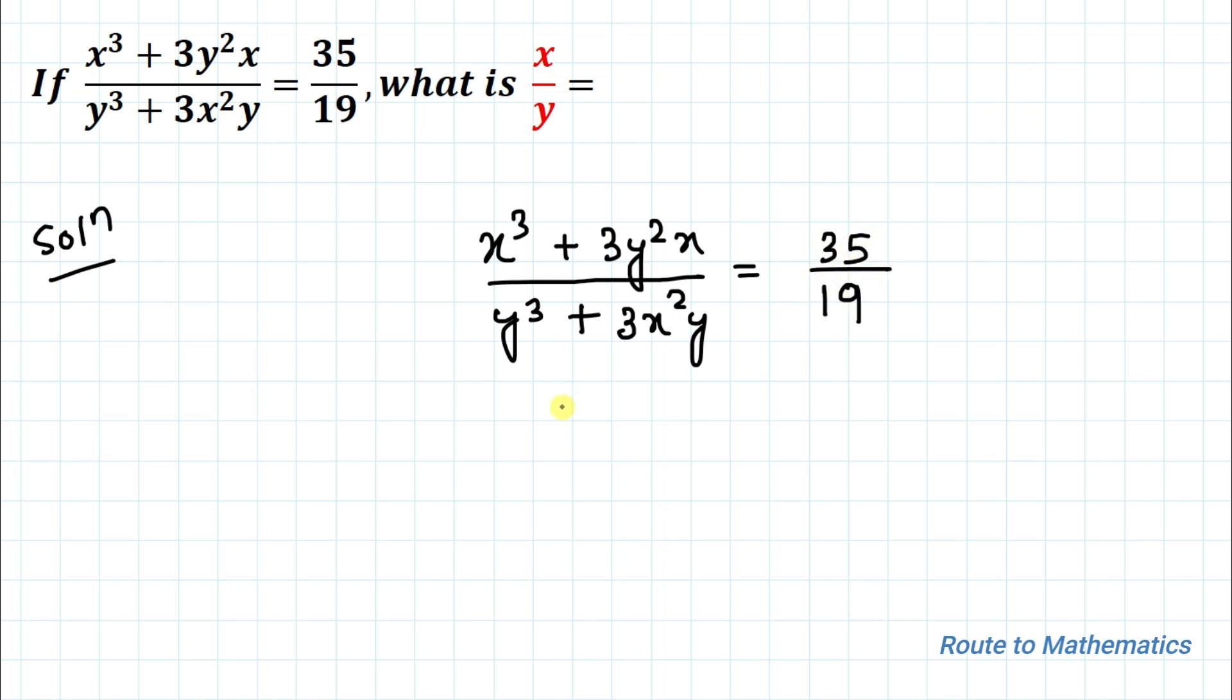The next step we are going to use componendo and dividendo method. So before applying this method, I am going to explain what the componendo and dividendo method says. The componendo and dividendo method says whenever a proportion, suppose a/b equals c/d, this can be written as (a+b)/(a-b) equals (c+d)/(c-d).